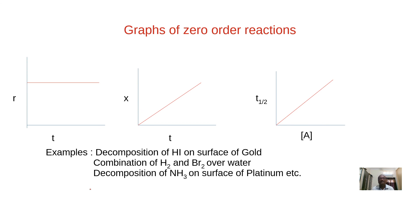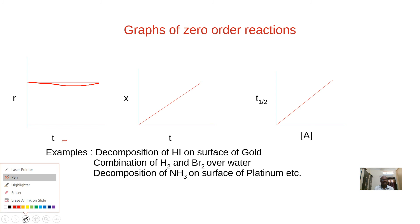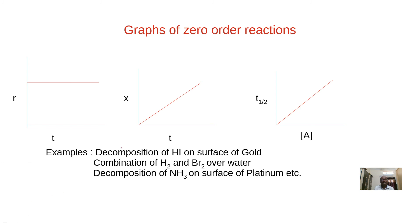The graphs for zero order reaction: The rate of reaction remains constant with time — a horizontal line on a rate vs. time graph. The graph of x vs. t is linear (since x = Kt, which is in the form y = mx). The half-life t½ is directly proportional to the initial concentration 'a', so the t½ vs. concentration graph is linear.